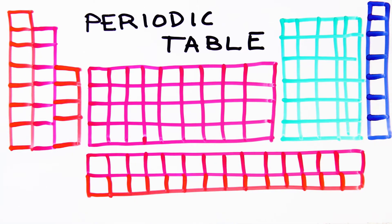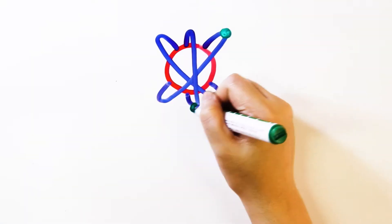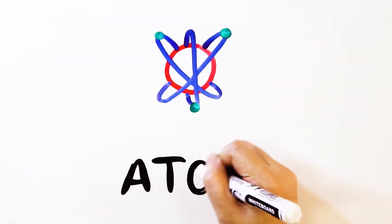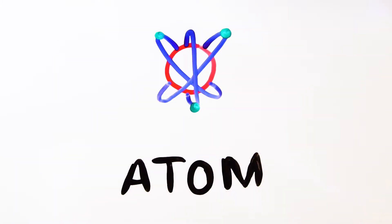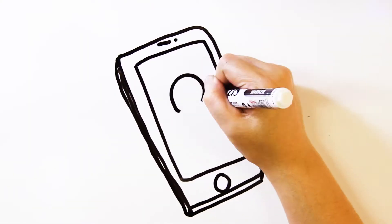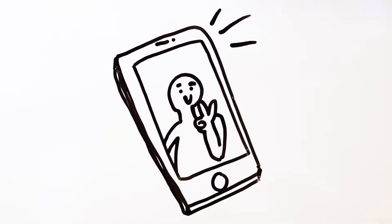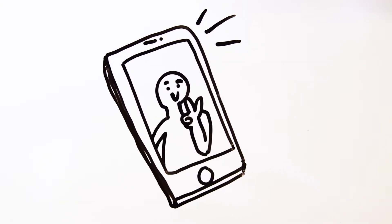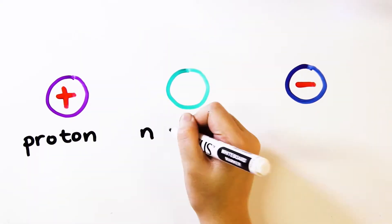Looking closer, the smallest particle in which you can divide the element and still be the same is called an atom. It is so small it won't even form a dot or even a pixel in a selfie. Sounds familiar? And yet, there are even smaller particles than atoms.